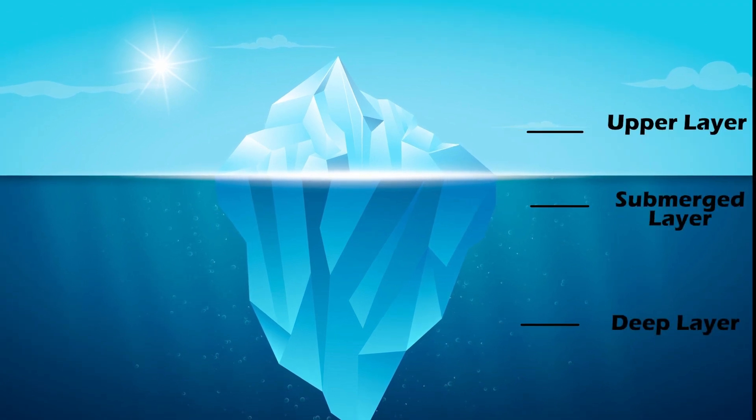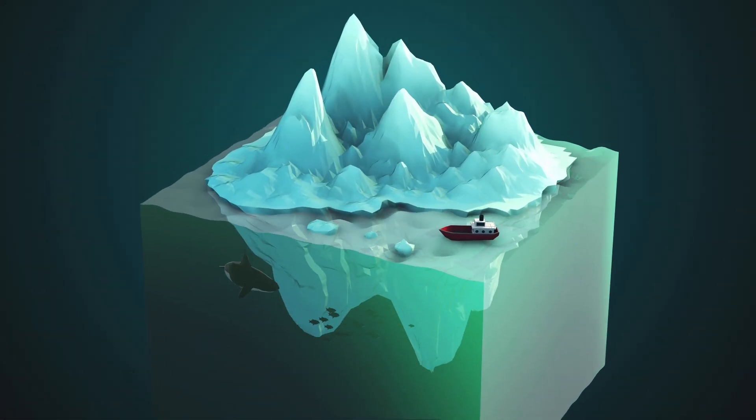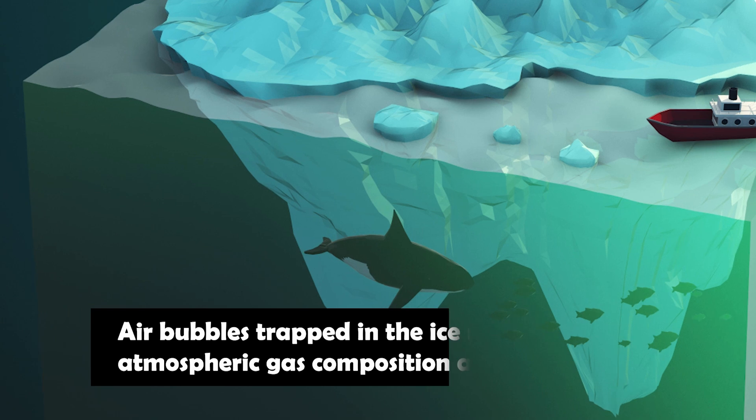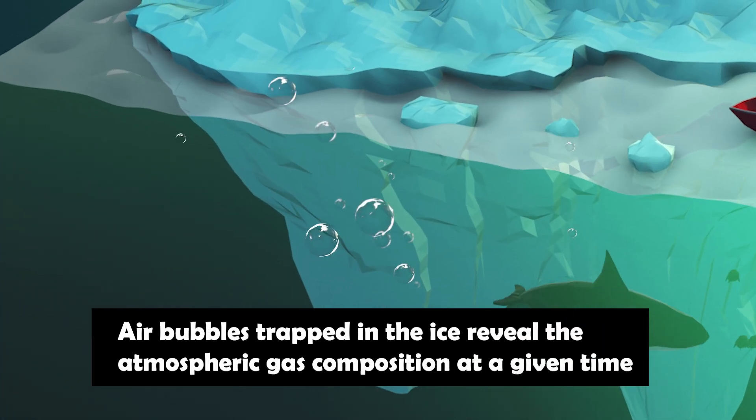Isotope ratios differ, for example, allowing the reconstruction of year-to-year temperature changes going back eons. Tiny air bubbles trapped in the ice also reveal the atmospheric gas composition at any given time.